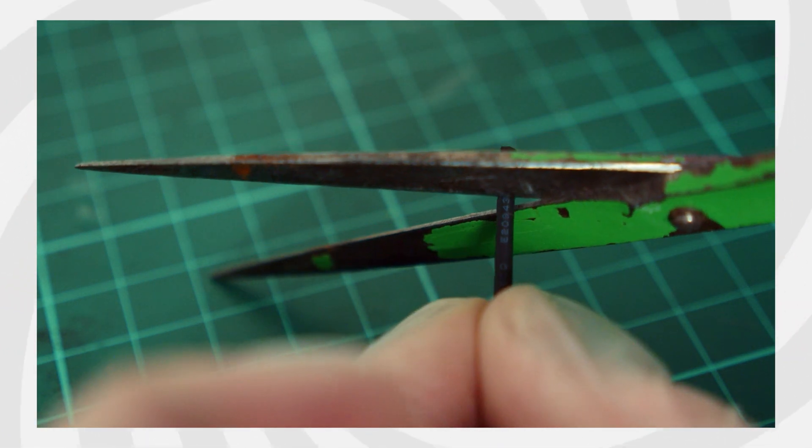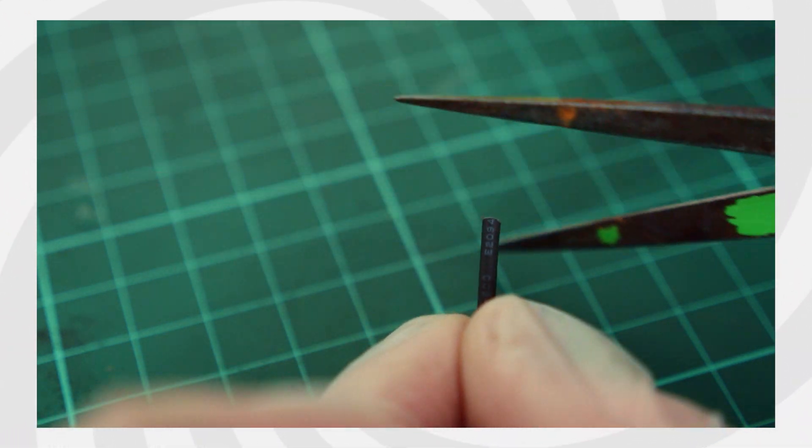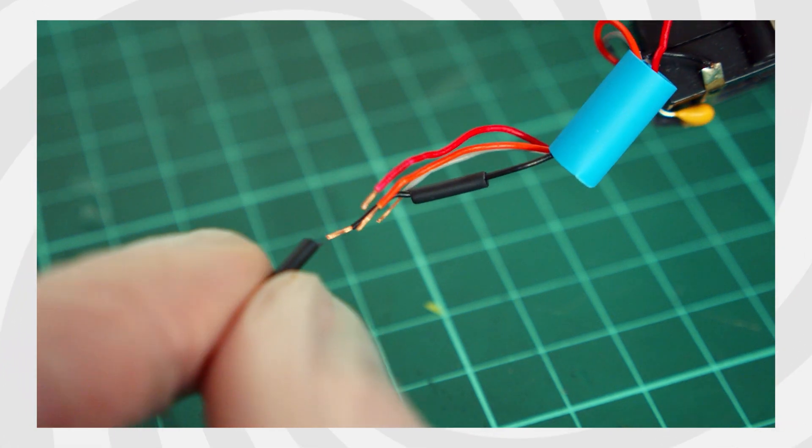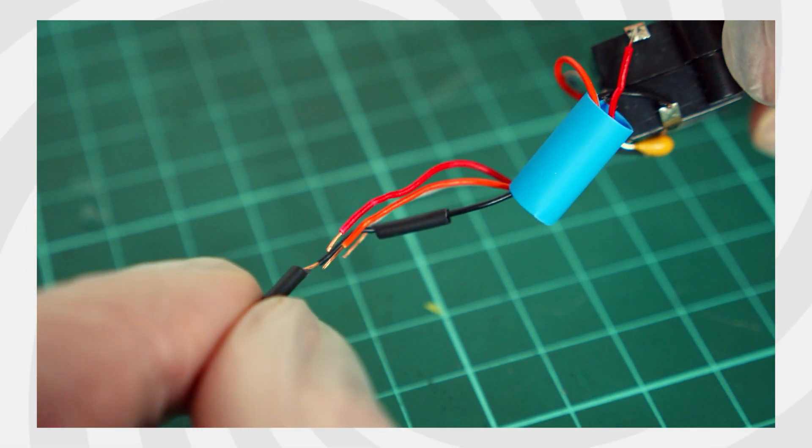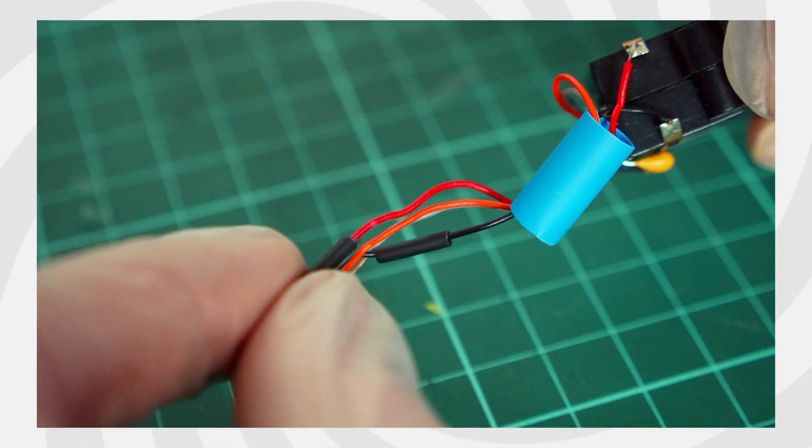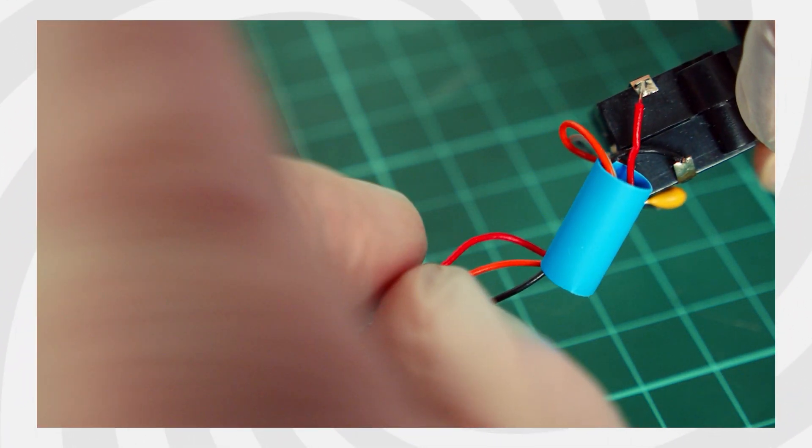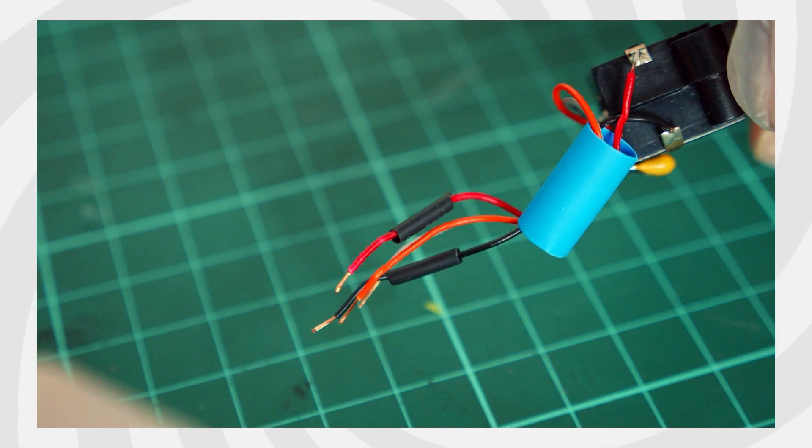Now is the time to add your heat shrink tubing. Cut it into short lengths and thread each wire through one of them. You only need to do this for one side of each color. I have also cut a larger piece of heat shrink tubing to help keep these wires neat and tidy once completed. You can also use tape.